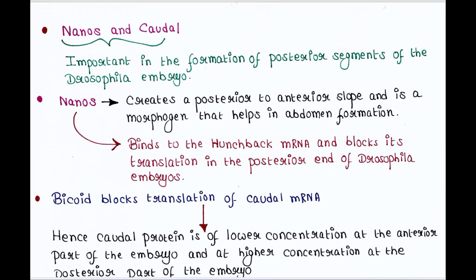Nanos and caudal are important in the formation of posterior segments of the Drosophila embryo. Nanos protein creates a posterior-to-anterior slope and is a morphogen that helps in abdomen formation. It binds to the hunchback mRNA and blocks its translation in the posterior end of Drosophila embryos.